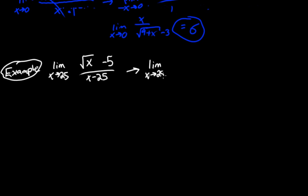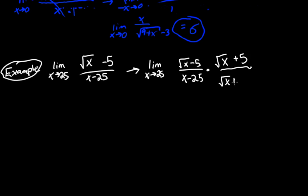We start with the limit as x approaches 25 of the square root of x minus 5 divided by x minus 25, and multiply by 1 written as the conjugate of the numerator: the square root of x plus 5 divided by the square root of x plus 5. Multiplying this out: the square root of x times the square root of x is just x, then we have plus 5 times the square root of x minus 5 times the square root of x, which equals 0, and then negative 5 times 5 gives us minus 25. So the numerator becomes x minus 25.